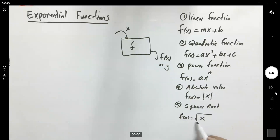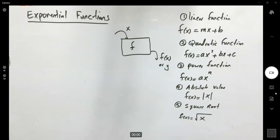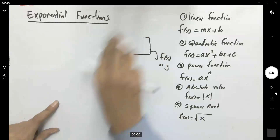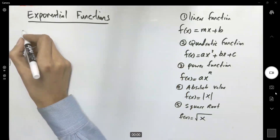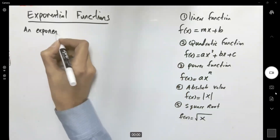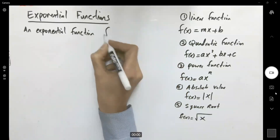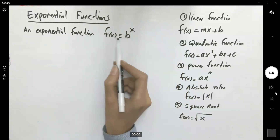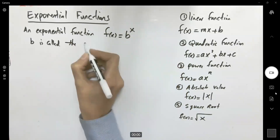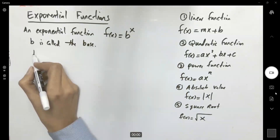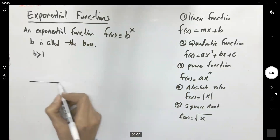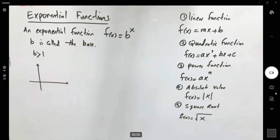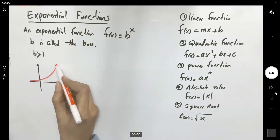Remember that when you have a square root and inside the radical you cannot have a negative number — all of those numbers must be positive or zero. Today we're going to start talking about an exponential function and its inverse, the logarithmic function. An exponential function f of x is defined as f of x equals b to the x, where b is called the base. If b is larger than one, you have an increasing function — the graph starts increasing from left to right.